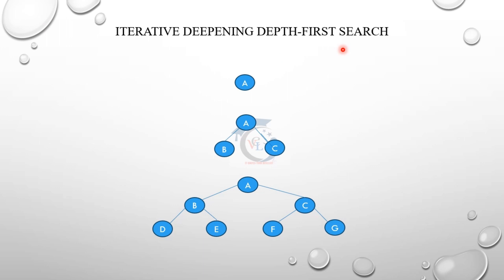So the two problems of depth first search - the infinite path and the limitation issue - are addressed by iterative deepening. We avoid infinity paths by gradually increasing the limit. The next level increases the limit gradually. As the limit increases, we do depth-first search, backtrack, and search for the goal node. Memory and time are saved in the same way. The overlimit gradually increases to reach the gold node.